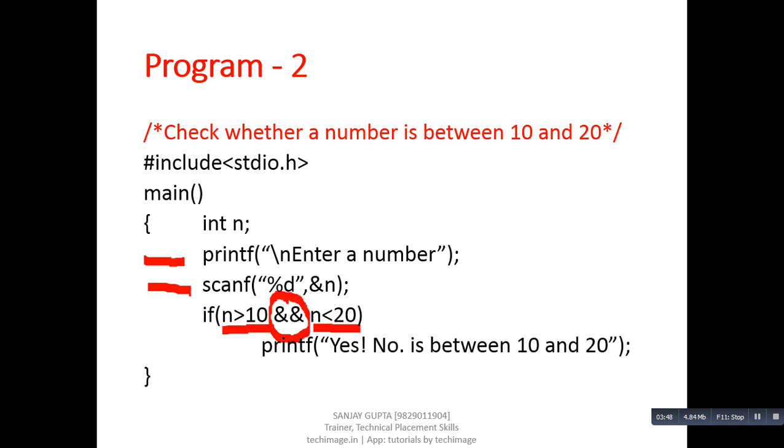Logical and operator checks both the conditions. If both the conditions are true, then only it will print the true part of the problem. Otherwise, nothing will be printed because we are not using else with this if statement. If this condition is true, then yes, number is between 10 and 20 will be printed on console. And if this condition is false, nothing will be printed on console.